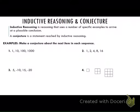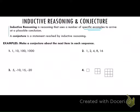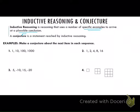Inductive reasoning is reasoning that uses a number of specific examples to arrive at a plausible conclusion. The big thing here is specific examples — you use what is around you to get to your conclusion. A conjecture is a statement reached by inductive reasoning — what you believe, your plausible conclusion, based on your examples.